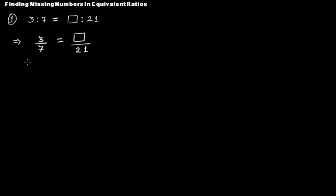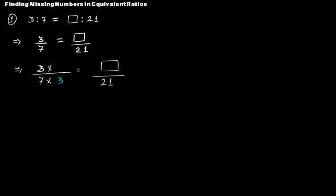So what is that number which can be multiplied to 7 so that we can get 21? If 7 is multiplied by 3, you'll get 21. Now since we have multiplied 7 with 3, we'll have to multiply this 3 also with the same number, that is 3. So 3 times 3 is 9, and therefore this ratio is 9 to 21. This is the number that was missing.